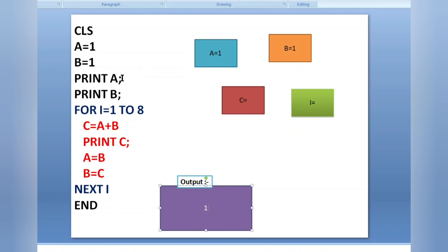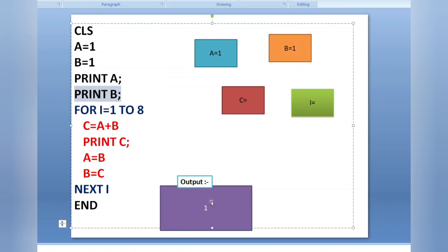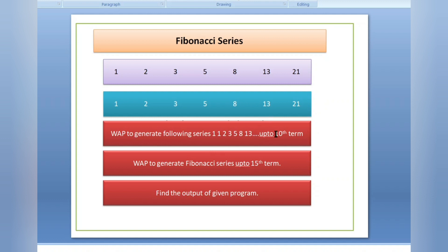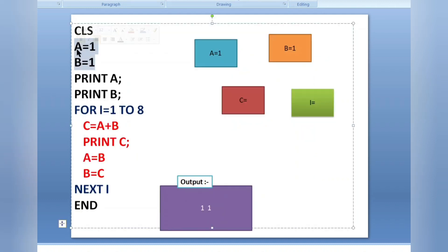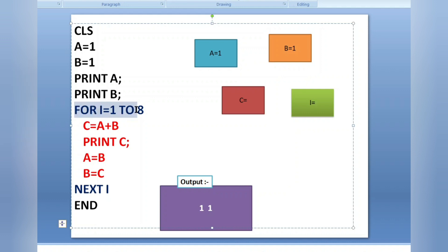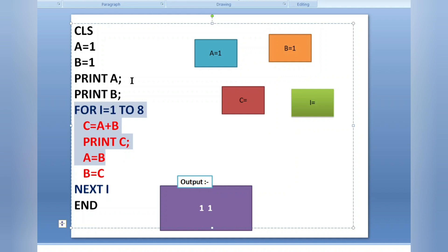I am using a semicolon so it will give a little bit of space, and then print b — the value of b, which is also one, gets printed. So one and one are printed in the output screen. Now I am using a for loop because I want to print ten times total. Since I have already printed two times, my for loop runs from one to eight — eight more prints gives a total of ten.